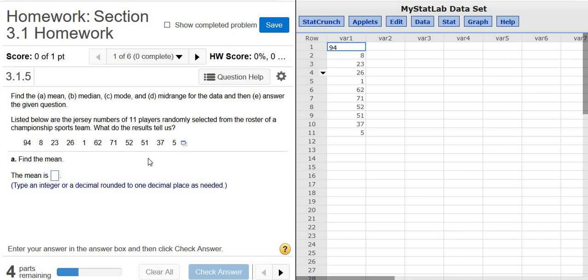In this problem, we have to find various things given this data. These are the jersey numbers for 11 players that were randomly selected from the roster of a championship sports team. For example, this is the jersey number 94, this is number 8, this is the player that had jersey number 23, etc.